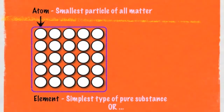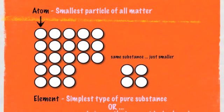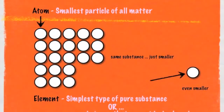Another way to define an element is any substance that cannot be broken down into a different or another substance. If I break off a piece of that element, it's still that same element, because it's made up of the same types of atoms — those white atoms. I could even break it down further and it's still an element, because the only thing that makes it up is that same pure substance, that same atom.